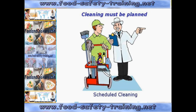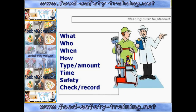The second type of cleaning is scheduled cleaning. This is where cleaning is planned and documented — a procedure which must be retained and kept up to date under your food safety management system.